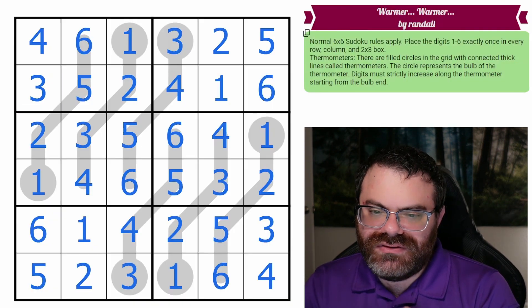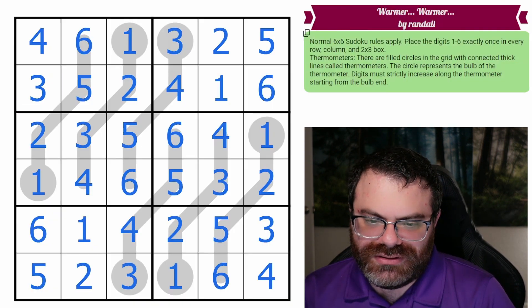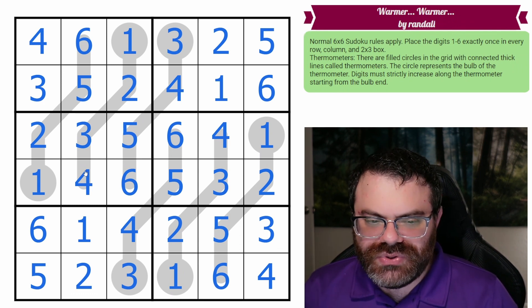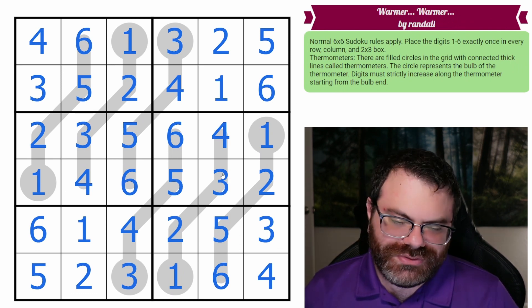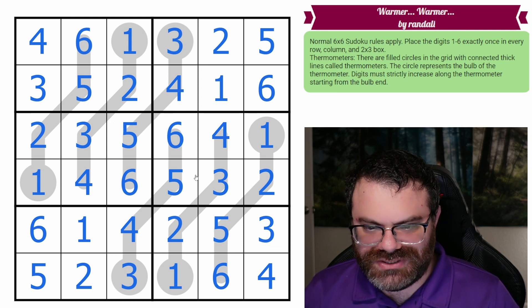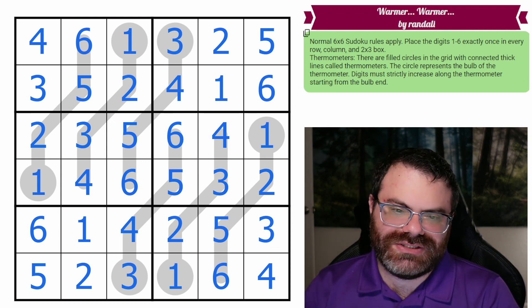Cool. Nice use of this thermal property Randall. If you knew to look for where do ones go, where do twos go, that basically finishes the puzzle. It's pretty nice. And then like, where do sixes go? It was useful.